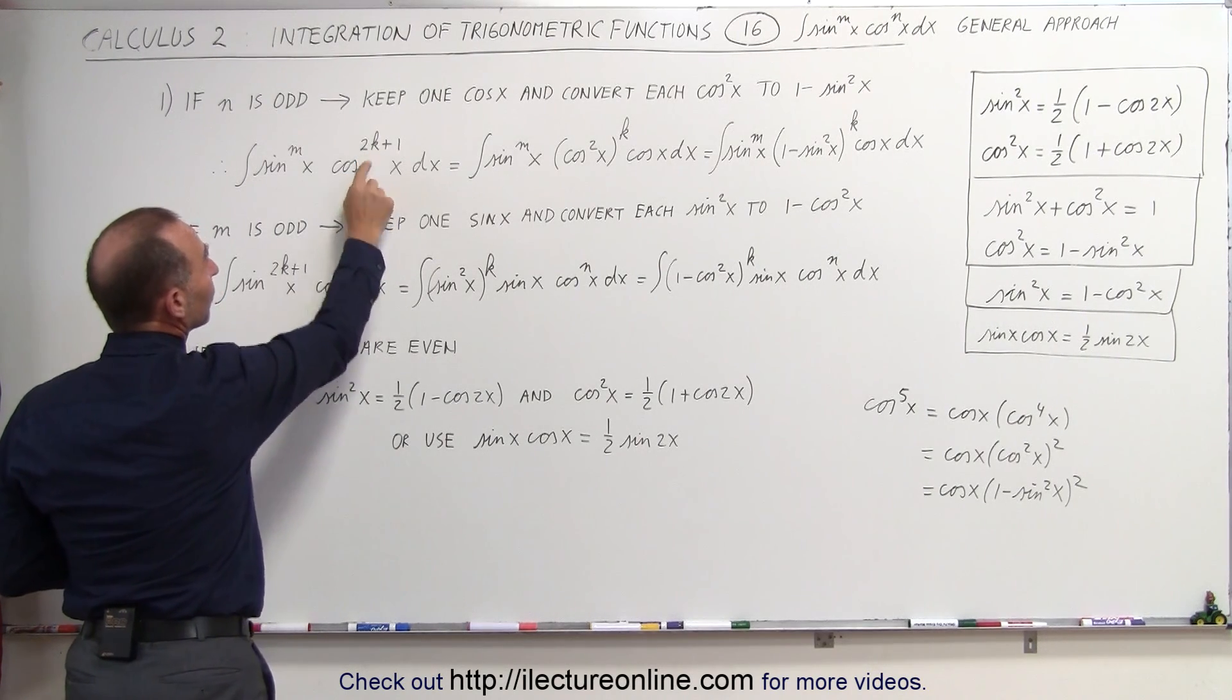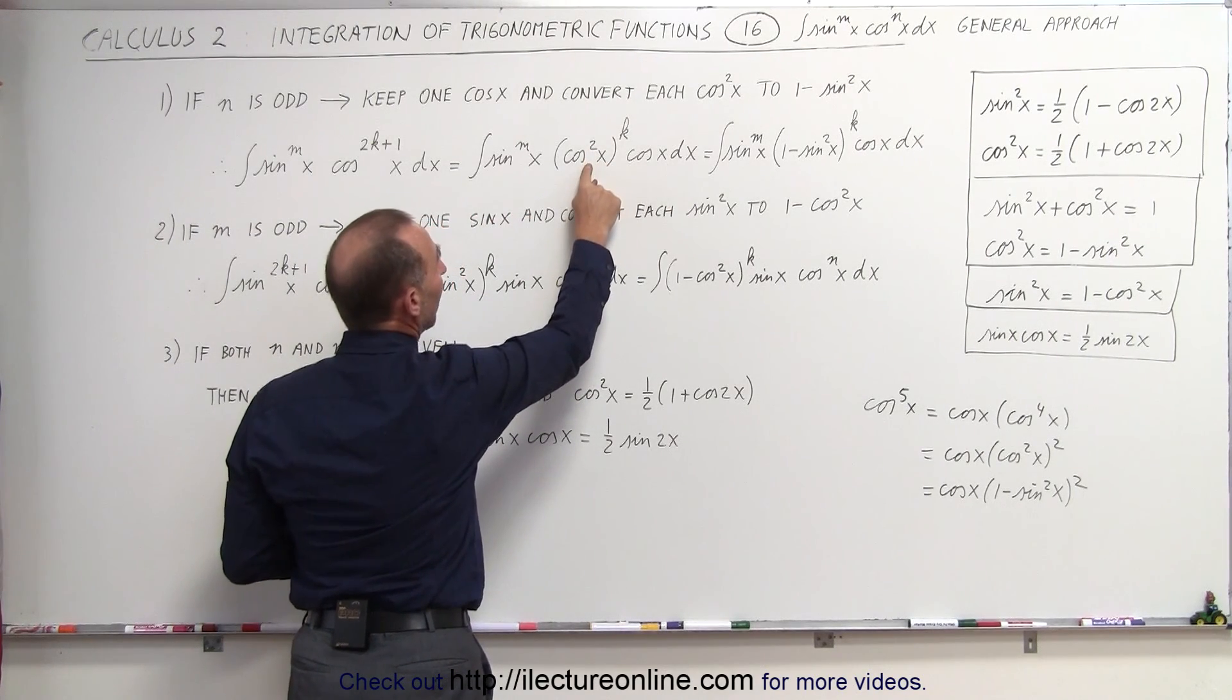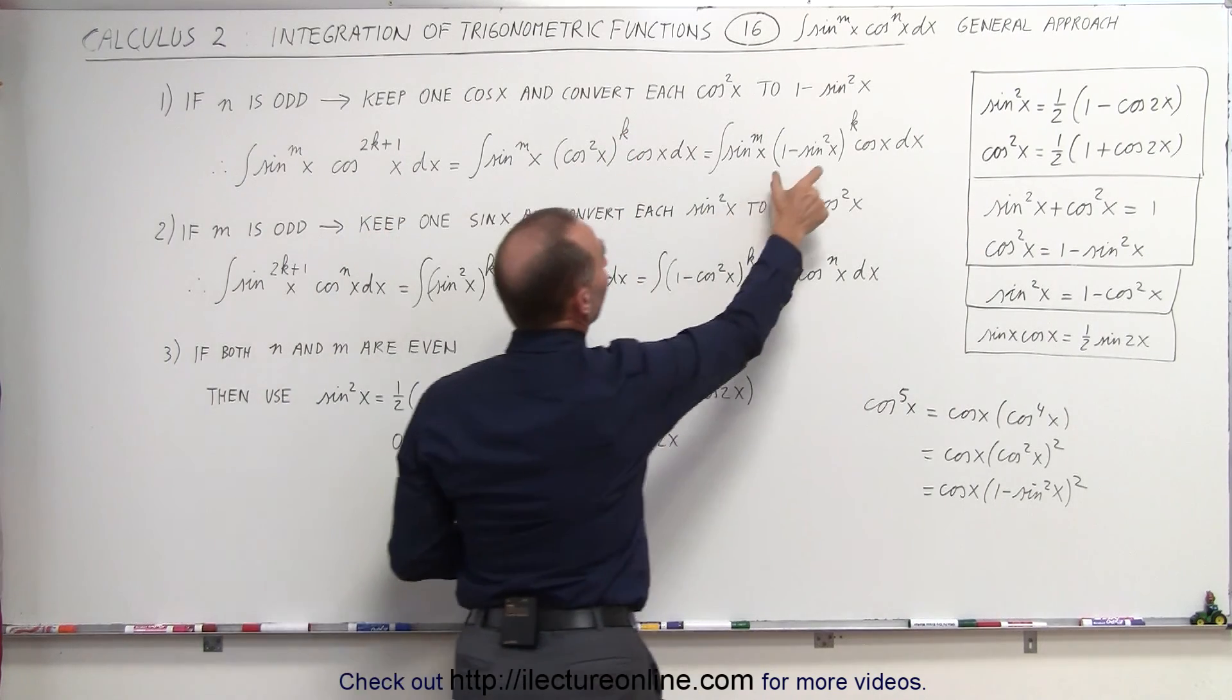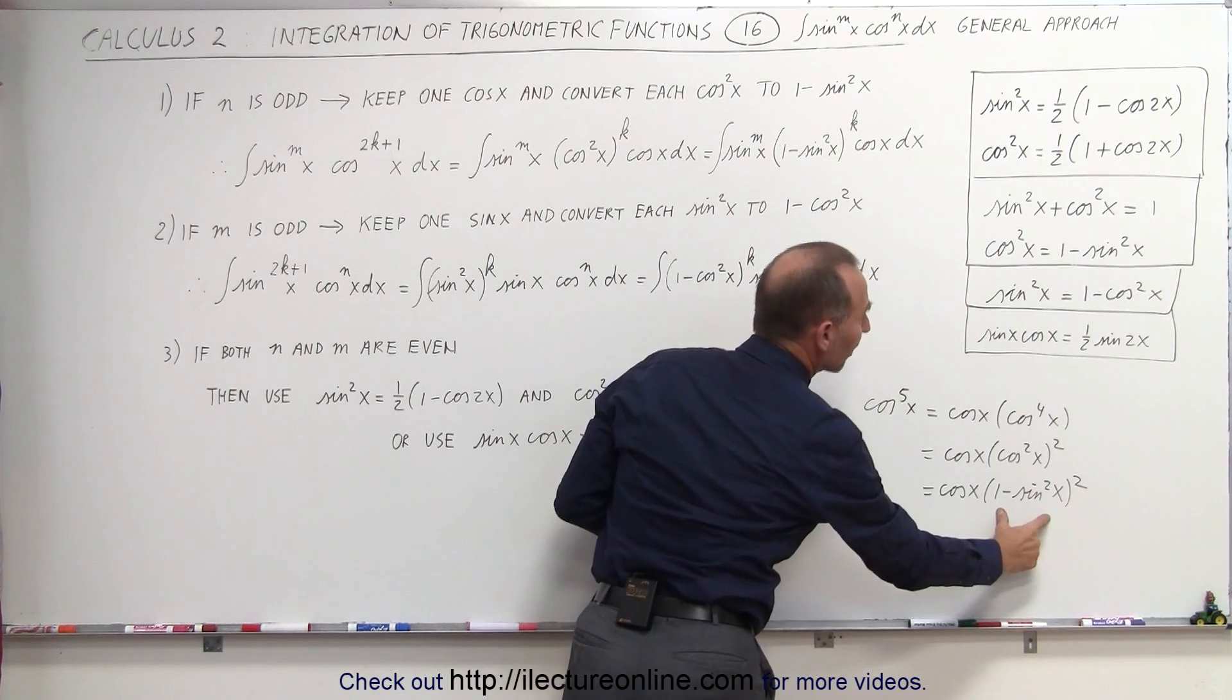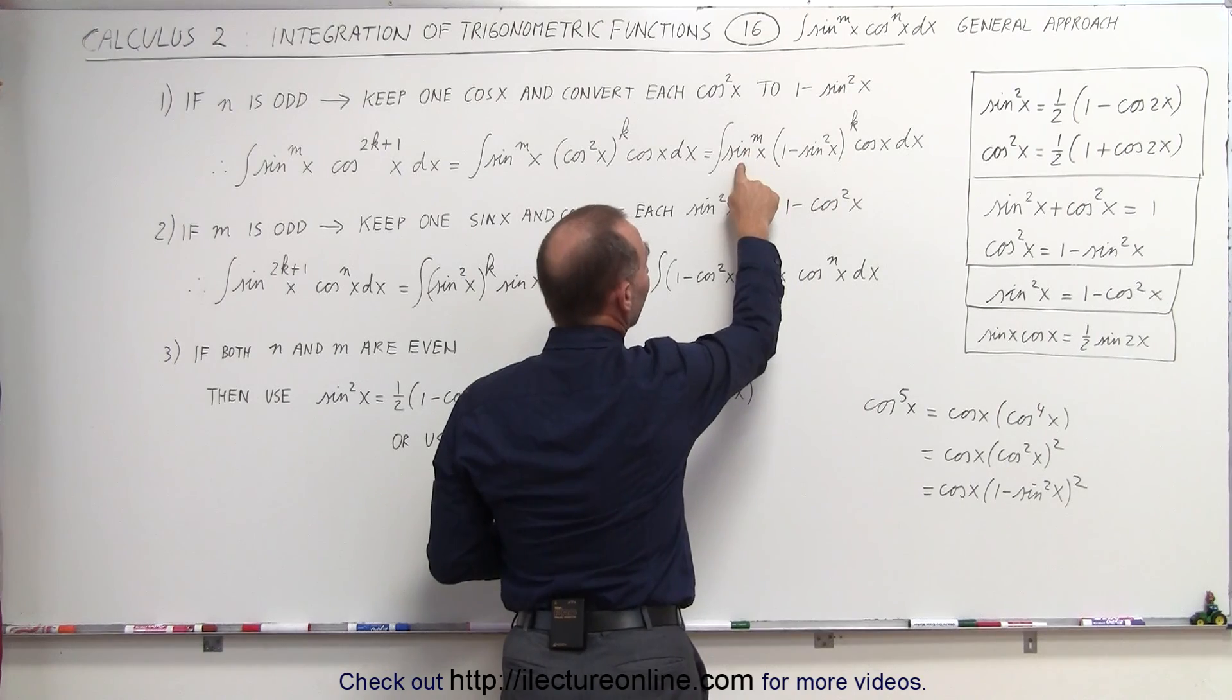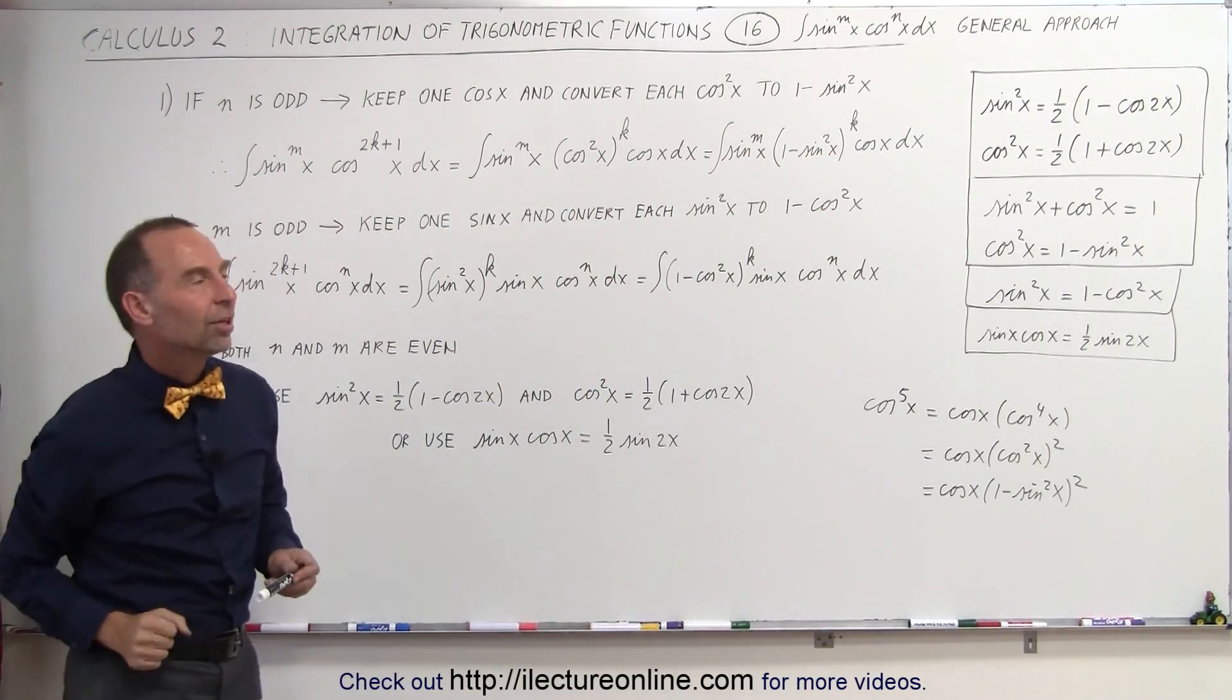You take cosⁿx and write it as 2k+1, you pull out a cosine of x, and now you only have an even power. You write it as (1 - sin²x), and eventually you write the (1 - sin²x). Then you multiply everything out, and all this is then multiplied times the cosine of x, and then you can integrate.